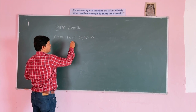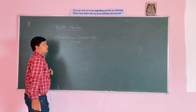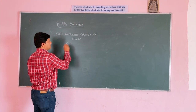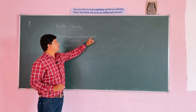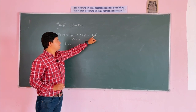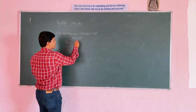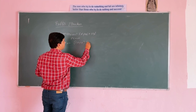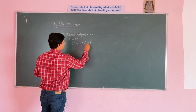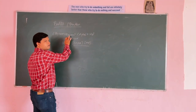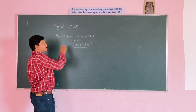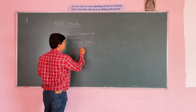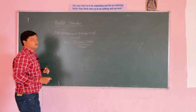Now we apply the Law of Mass Action. Ka, the equilibrium constant, equals the concentration of products divided by concentration of reactants. So Ka equals concentration of CH3COO minus multiplied by concentration of H3O plus, divided by concentration of CH3COOH. We do not include the concentration of water because water is in plenty, so we neglect it.